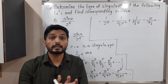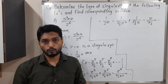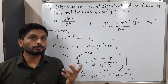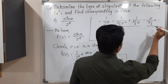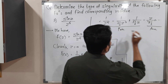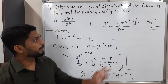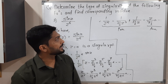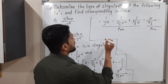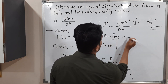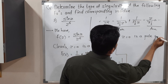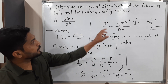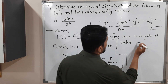We now identify the principal part — where z appears in the denominator — and the analytic part. The principal part has three terms: 1/z⁵, 1/(3!·z³), and 1/(5!·z). Since the principal part has finitely many terms, z = 0 is a pole. The highest power of z in the denominator is 5, so it is a pole of order 5.